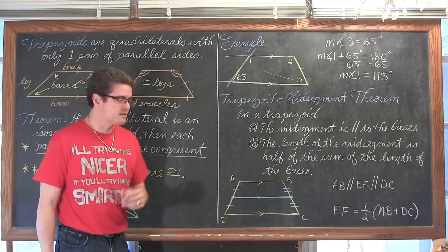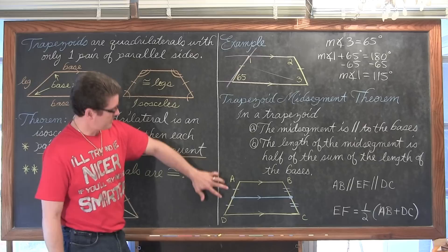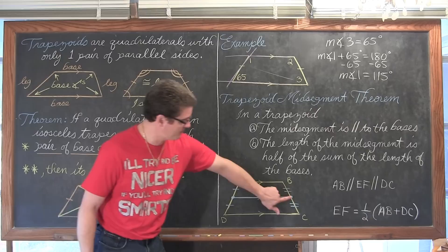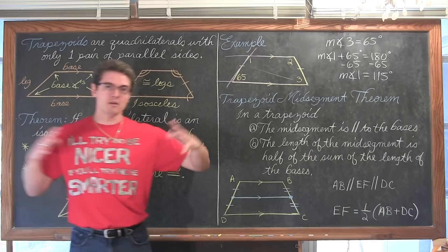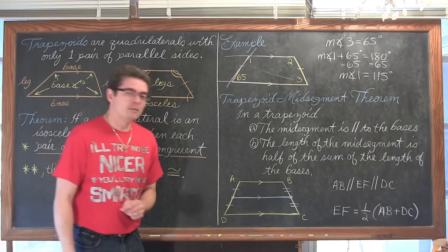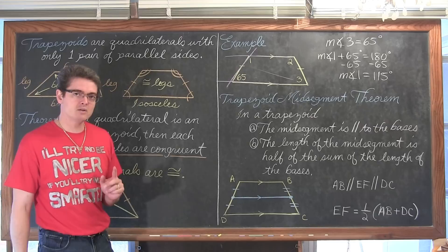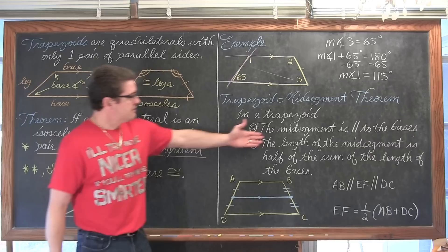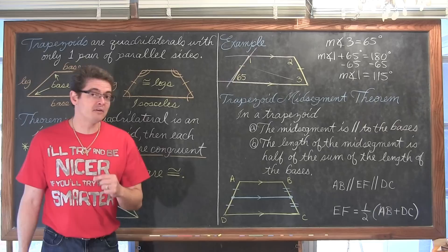In a trapezoid, if you have a mid-segment connecting the mid-points of the legs, that mid-segment is parallel to the bases. The tick marks on each of the legs show they have been cut in half at their mid-points. The mid-segment does not have to make the trapezoid isosceles — those leg halves do not have to be equal to each other. So we have three parallel segments: the two bases and the mid-segment.